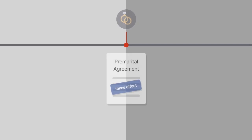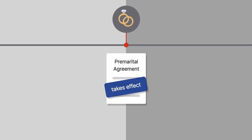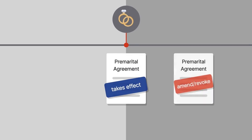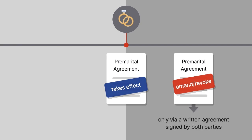Assuming prospective spouses meet the requirements for a valid premarital agreement, their agreement will take effect when they marry. Once married, they may amend or revoke the agreement only via a written agreement signed by both parties.